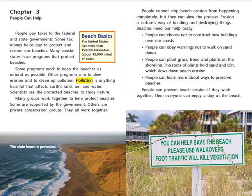Chapter 3: People can help. People pay taxes to the federal and state governments, and some tax money helps pay to protect and restore our beaches. Many coastal states have programs that protect beaches. Some programs work to keep beaches as natural as possible. Other programs aim to slow erosion and clean up pollution. Pollution is anything harmful that affects earth's land, air, and water. Scientists use the protected beaches to study nature. Many groups work together to help protect beaches — some are supported by the government, others are private conservation groups. They all work together.